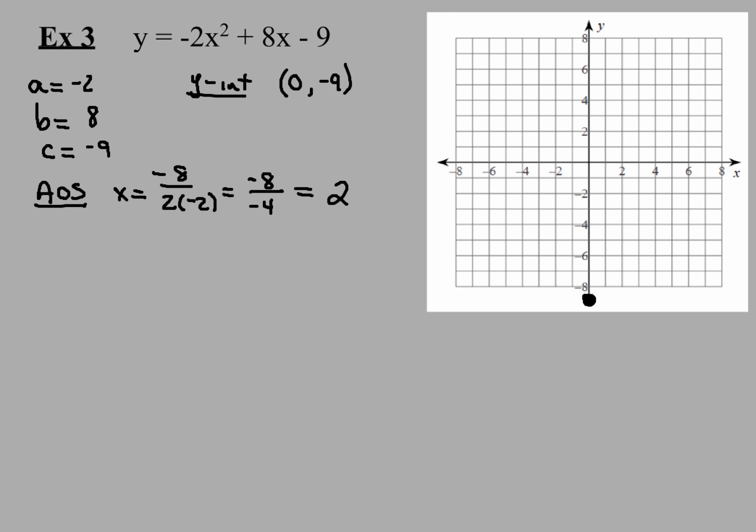I'm going to take that value, 2, and move over to my graph where the vertical line x = 2 is. I'm going to draw that in as a dashed line because that represents my AOS, my axis of symmetry. So x = 2 is where my AOS is. That's going to divide the parabola in half.